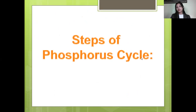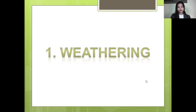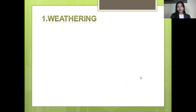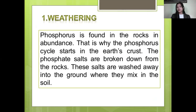These are the steps of the phosphorus cycle. The first one is weathering. Phosphorus is found in rocks in abundance. That is why the phosphorus cycle starts in the earth's crust. There is no phosphorus in the atmosphere.